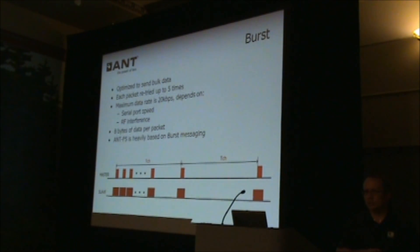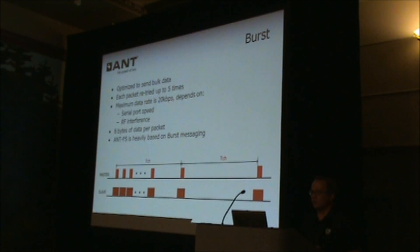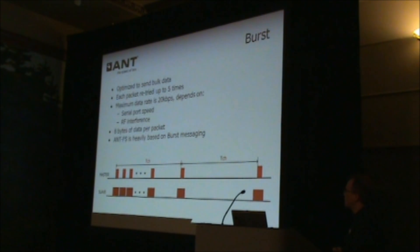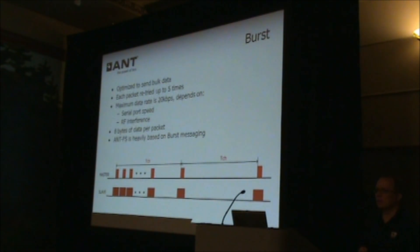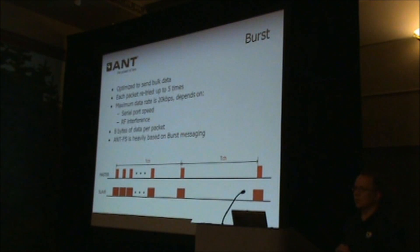The maximum data rate for burst transactions is 20 kilobits per second. People always ask what it actually is, and that depends on a couple of things. First, it depends on your serial port speed — if you've got a serial port that's 9600 baud, don't ask why you're not getting 20 kilobits per second over the air. The other factor is RF interference. If a lot of packets are being lost and retried by ANT automatically, your effective throughput will be less than 20 kilobits per second. So 20 kilobits per second is the ideal situation in an ideal RF environment with very little interference and a serial port fast enough to keep up.